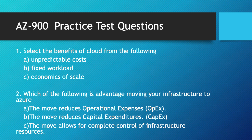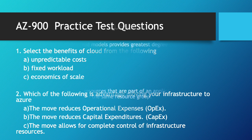Second question: which of the following is an advantage of moving your infrastructure to Azure? The correct answer is that the move reduces capital expenditures. Capital expenditure is the investment to purchase various infrastructure in advance. That was the old practice, but with the cloud, the service provider takes care of all the infrastructure and organizations need not buy any infrastructure. So the correct answer is B. A and C are not correct.